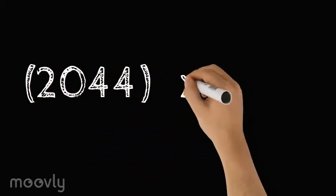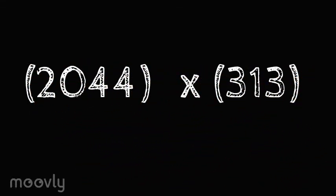We consider two numbers. In this video, I'll be using 2044 and 313. And both of these numbers are in base 5.